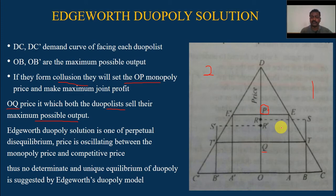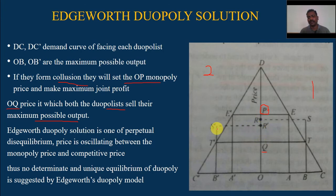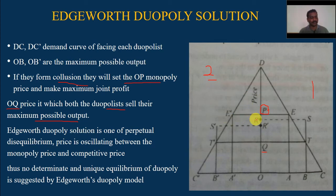But when Producer 1 reduces the price from OP to OR, Producer 2 finds most of his customers deserting him and his sales are considerably reduced. Once again, thinking that Producer 1's price will remain unchanged, Producer 2 decides to change his price from OP to OR1. At this price, he is able to sell a greater output and earn a greater profit than at the monopoly price.